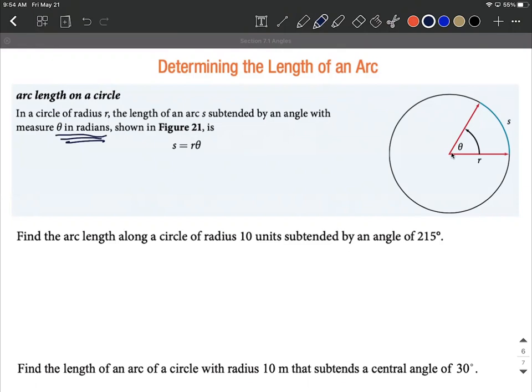Let's jump right into one of these problems. We're going to find the arc length along a circle of radius 10 units subtended by an angle of 215 degrees. The radius being 10 units tells us r = 10. Our angle theta is 215 degrees, but there's a problem. This is in degree measure; we need theta to be in radians.